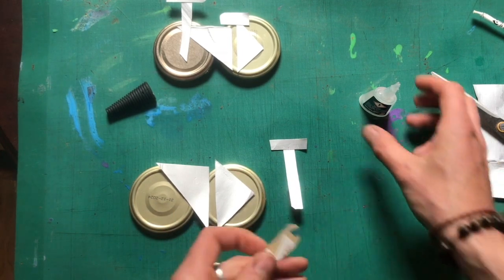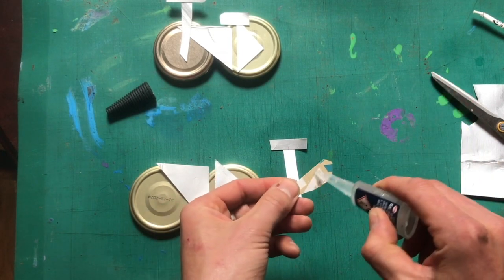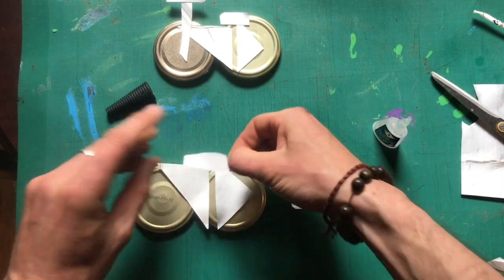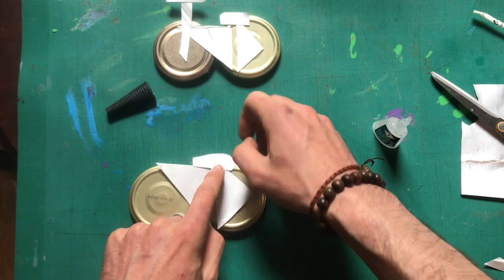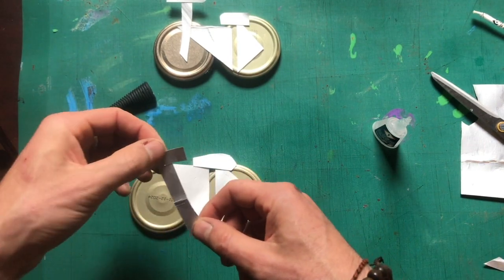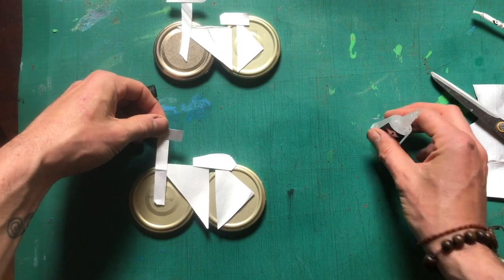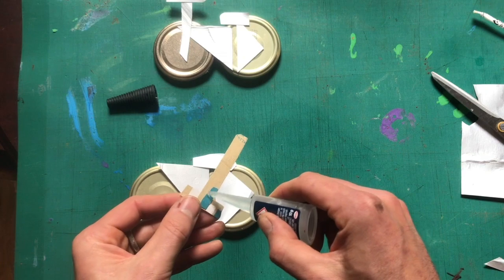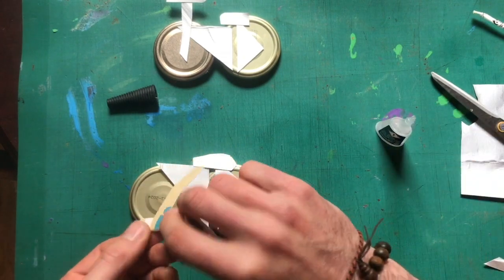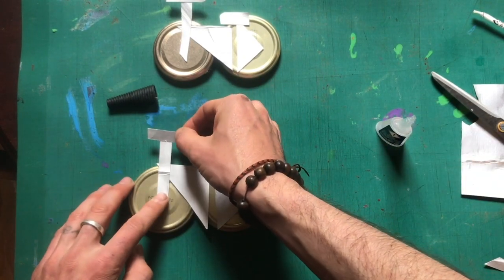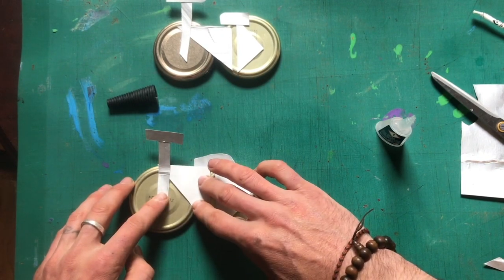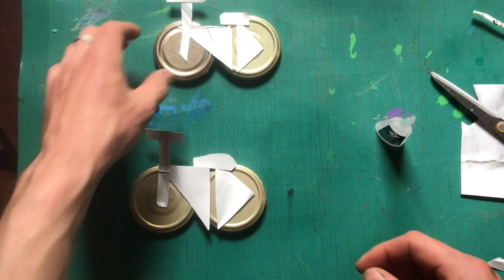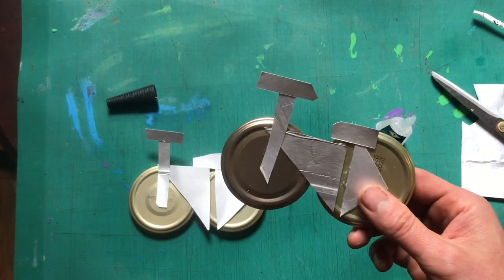And we'll put the saddle on. You need somewhere to sit on your bike. It's gonna be a low saddle, it's a kid's bike. And then we'll do our front forks. Bit of glue. And now we'll leave that to dry and our bike should be ready to go. I'm gonna give this one to Roisin and she's gonna decorate it.